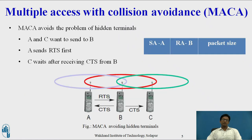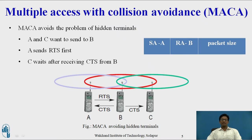Let us see the hidden terminal scenario. MACA avoids the problem of hidden terminal by using RTS and CTS packets. Here, terminals A and C both want to send data to terminal B. First, A sends an RTS packet containing sender address A, receiver address B, and the packet size. After that, C waits after receiving the CTS from B, as the CTS packet contains sender and receiver addresses, informing C that a transmission is ongoing between A and B. So C will not send any data packet until this transmission is complete, thus avoiding collision.